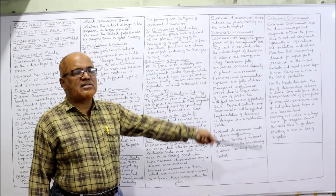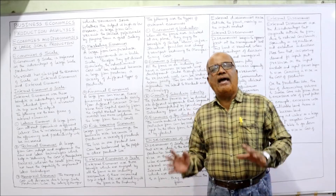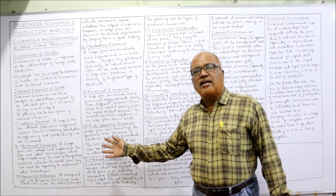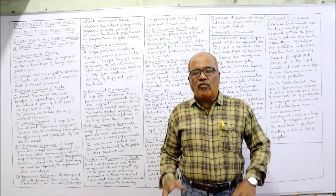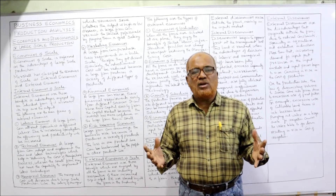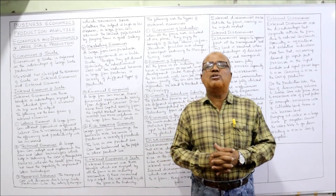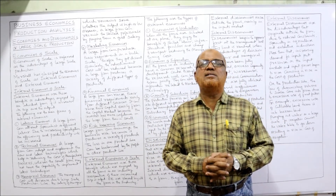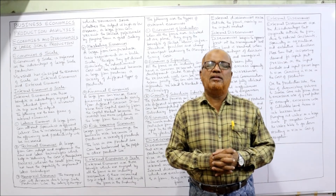So these are the external diseconomies. In this video I have explained the economies and diseconomies of large scale production. Economies are of two types — internal and external — and similarly diseconomies are also internal and external. Overall, the economies are more than the diseconomies of large scale production, which is why most firms go ahead with large scale production. Remember these points while writing your examination answer on economies and diseconomies of scale.